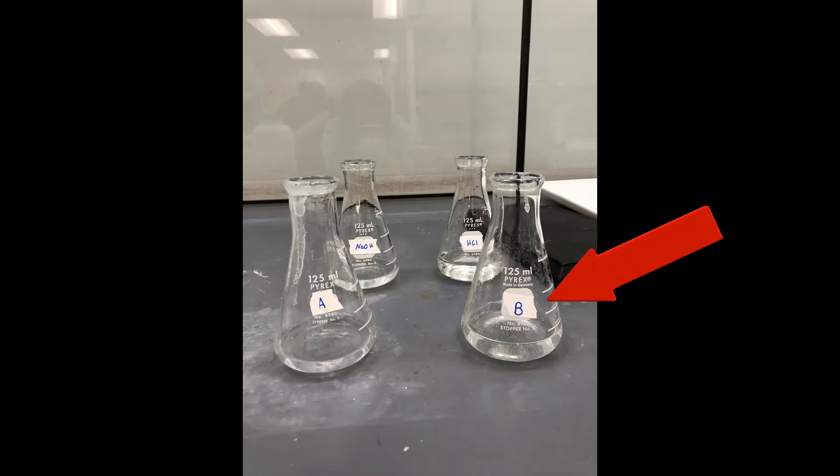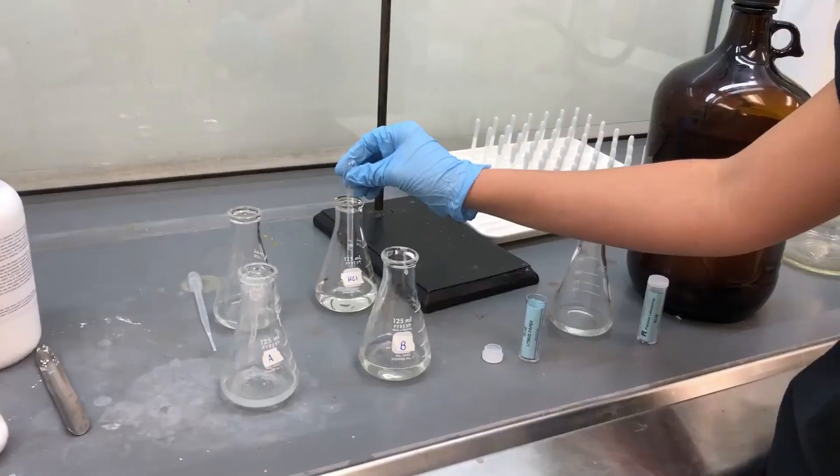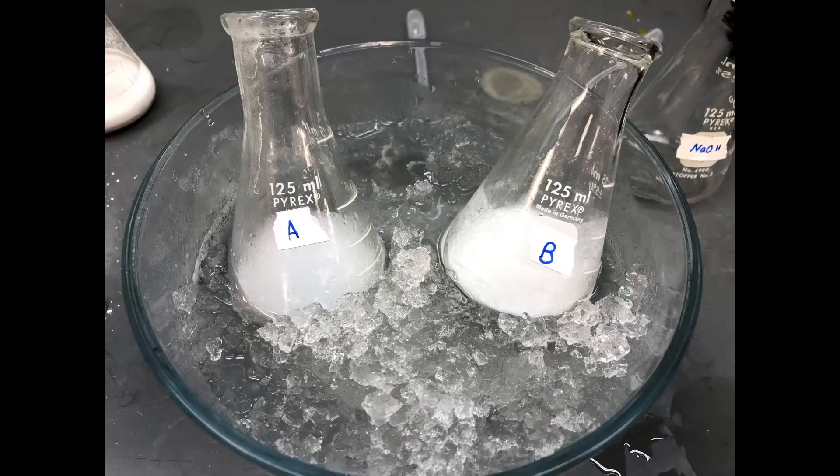For flask B, you will be doing the same thing as flask A, but with HCl to get the solution to a pH of about 2. If precipitate does not form, add more HCl. Transfer both solids into separate and labeled test tubes for later.